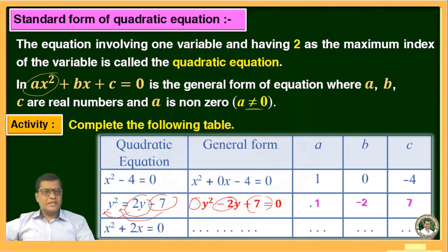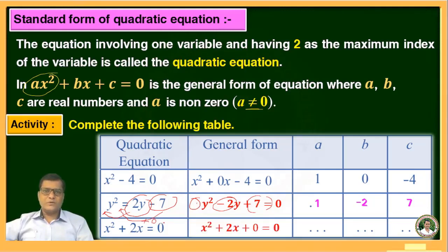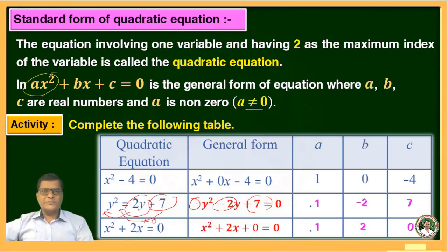Similarly, the last equation is x² + 2x = 0. Here the constant term is 0, so the general form is x² + 2x + 0 = 0. The values are: a = 1, b = 2, and c = 0. In this way, you can complete the activity.